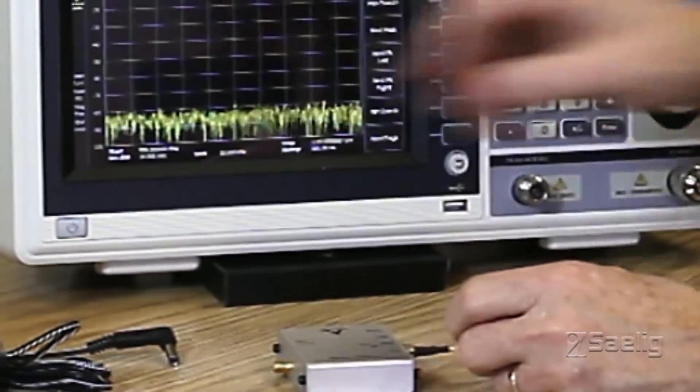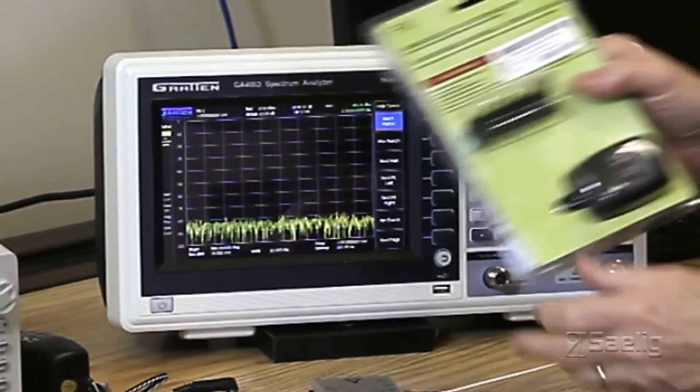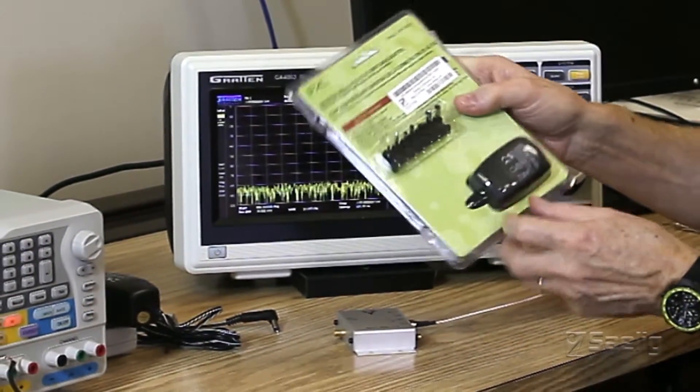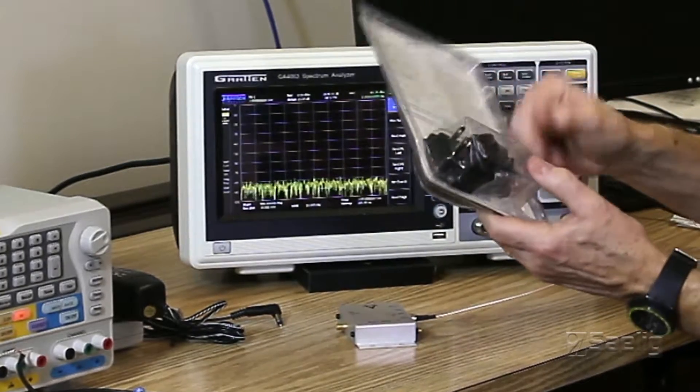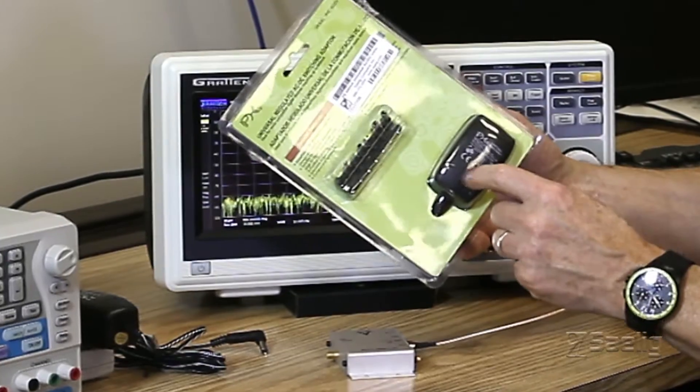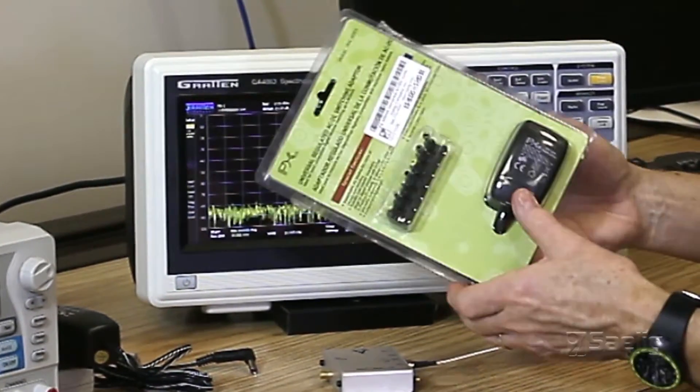So what we have here are these nice little supplies called the 600 milliamp universals. We sell these and they have an adjustable output. There's a little key that you can set on the unit.